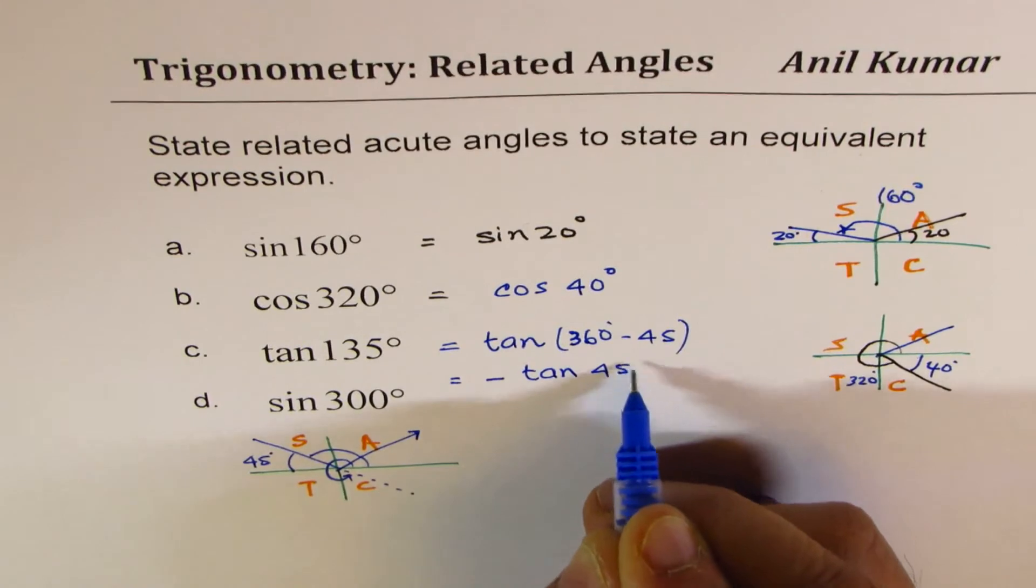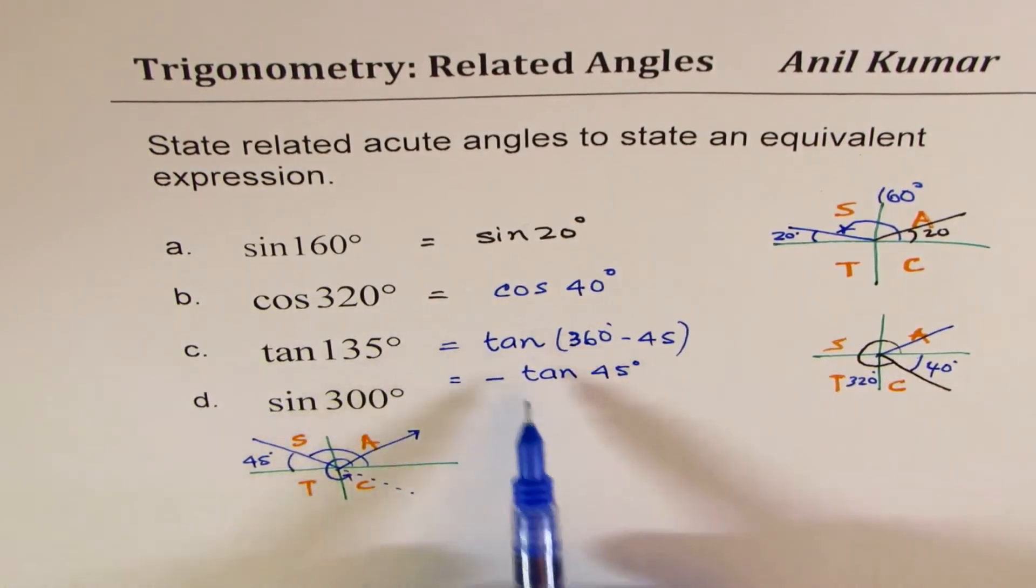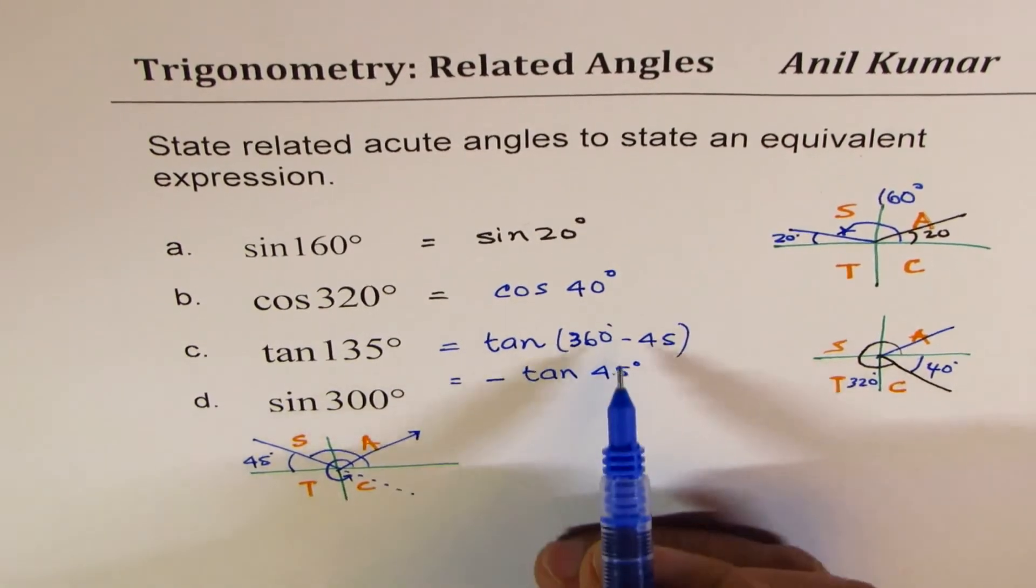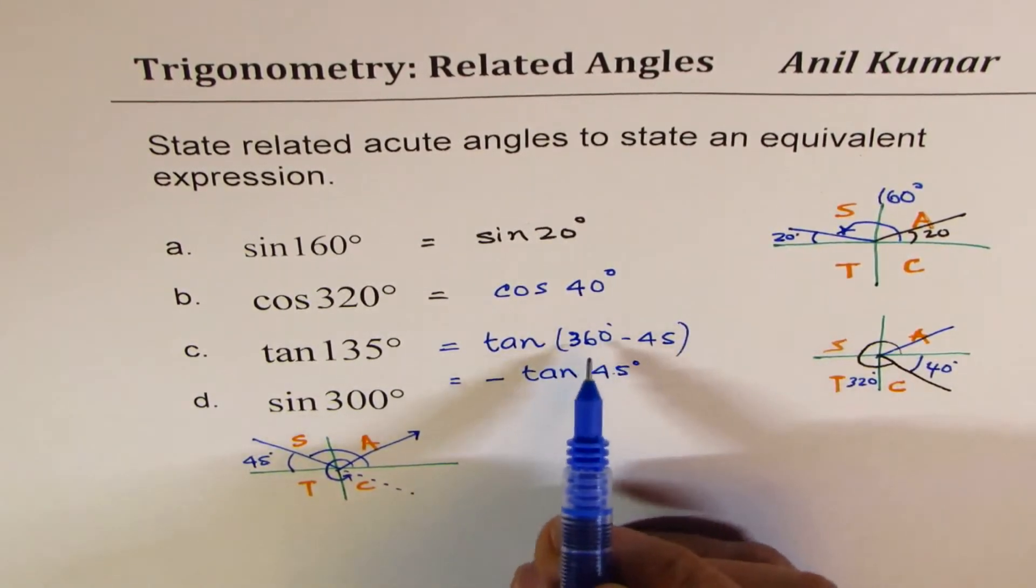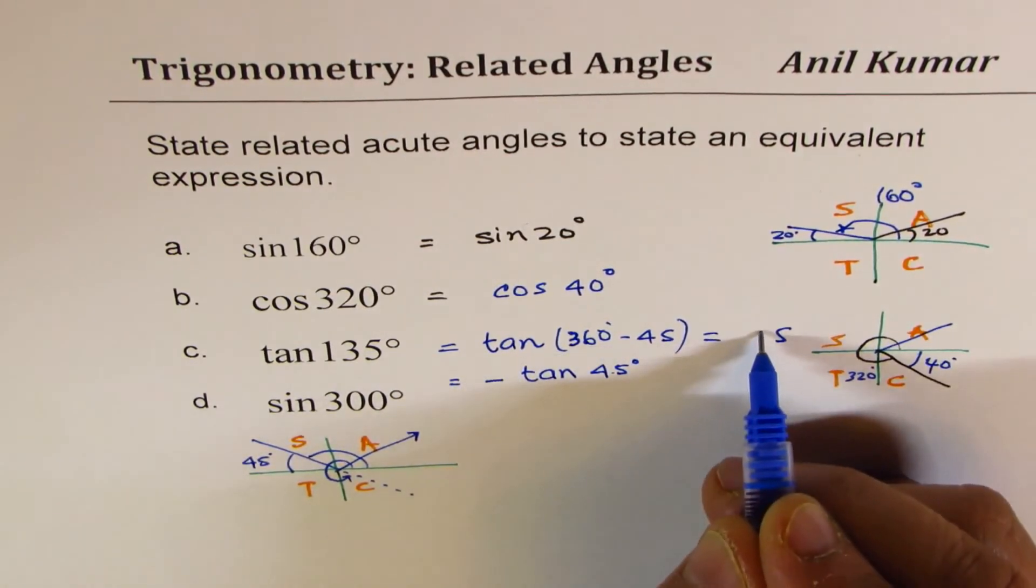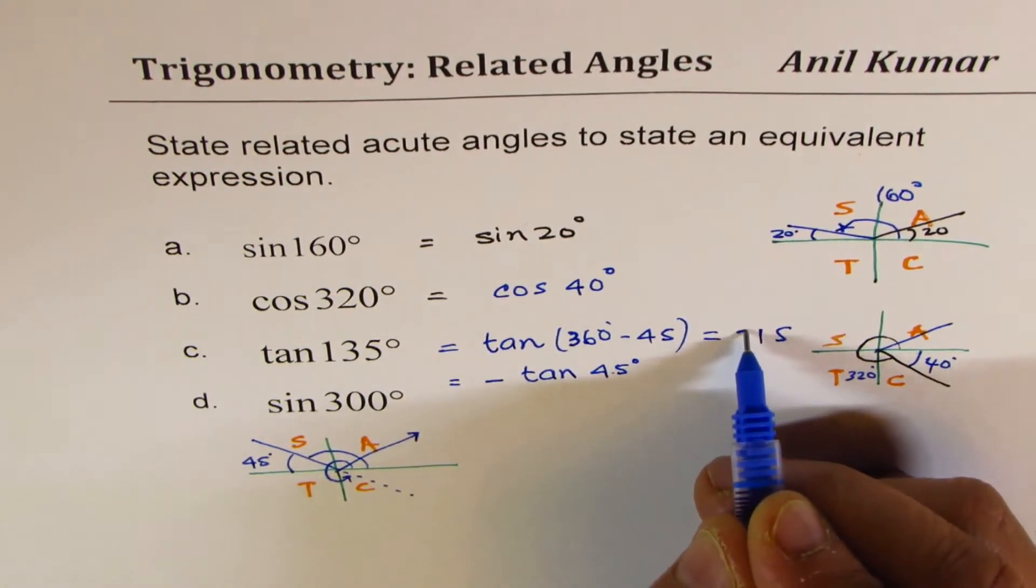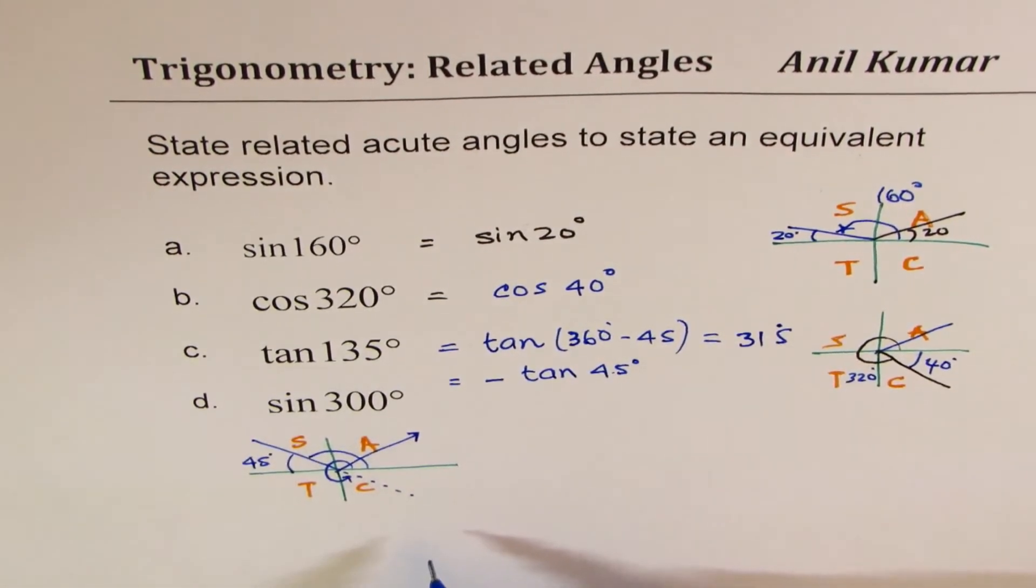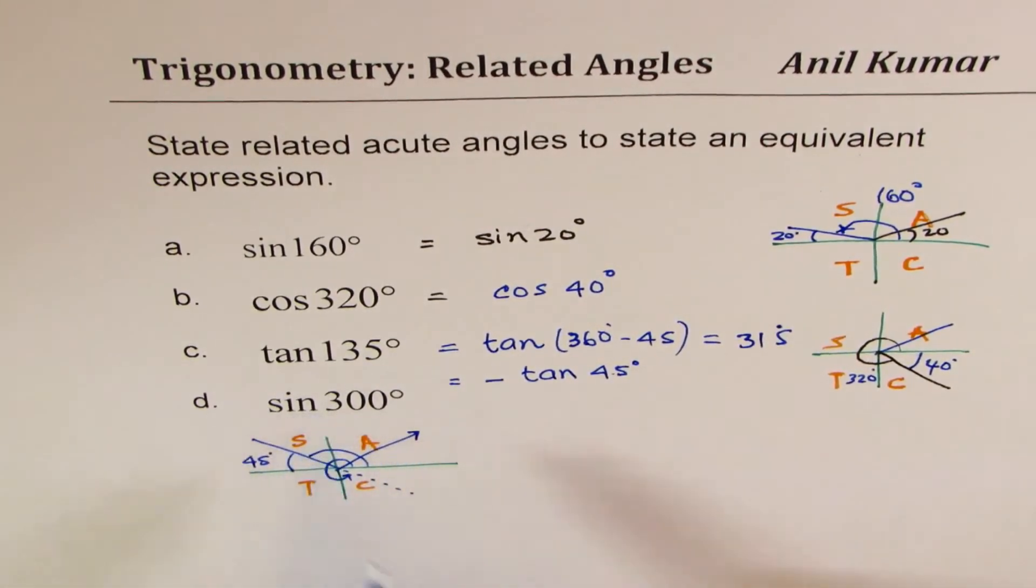Do you see that? So we could even write minus of tan 45 degrees. So these are different ways of doing it. You would always take away 45 from here and then you get 315 degrees as the angle. And in this case is 45.